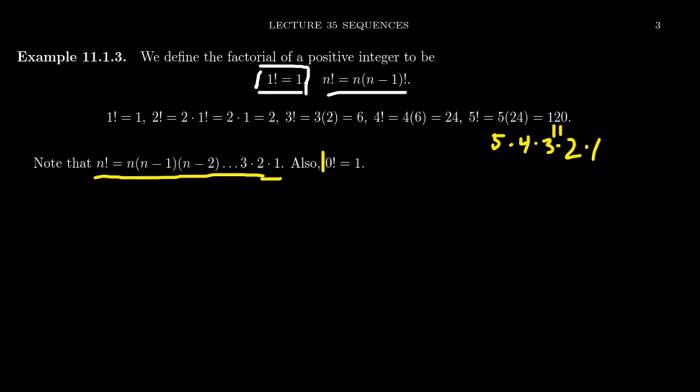As an aside, the factorial sequence does include zero factorial, which is defined to be one. Some people erroneously think zero factorial should be zero, because zero times anything is zero. But the issue is that zero factorial doesn't have a predecessor in the recursion, so you have to define it by another rule. Turns out that zero factorial equal to one is actually the natural definition when thinking about sequences and probabilities.